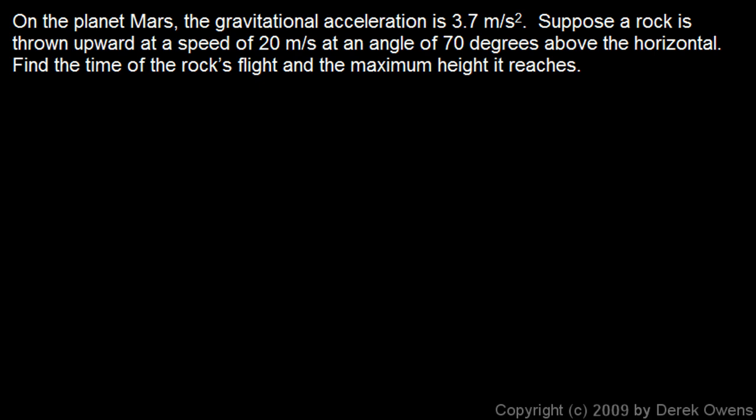In this problem, we're told that on the planet Mars, the gravitational acceleration is 3.7 meters per second squared. Suppose a rock is thrown upward at a speed of 20 meters per second at an angle of 70 degrees above the horizontal. Find the time of the rock's flight and the maximum height that it reaches.